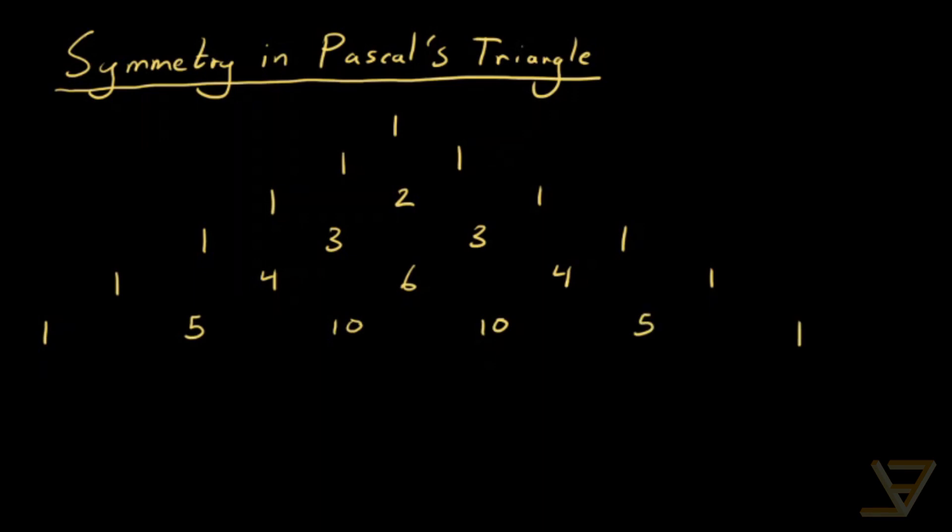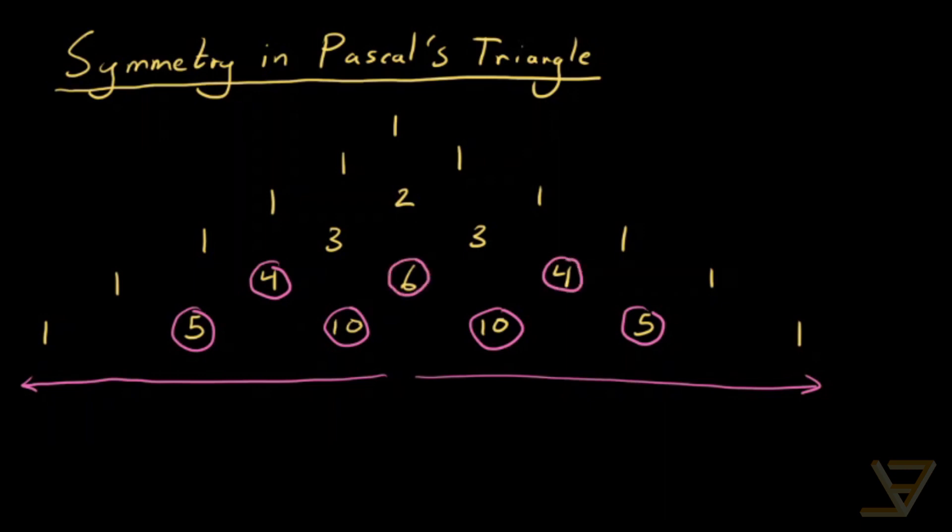So as you probably noticed here, we've got a symmetry going from left to right or right to left because we have corresponding terms. Five corresponds to this five, the ten here corresponds to this ten, the four here corresponds to this four, and the middle terms are just symmetric by themselves. We have the three corresponding to this three and so on.